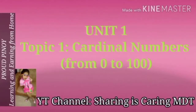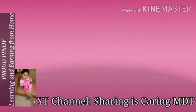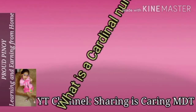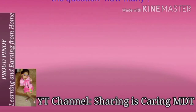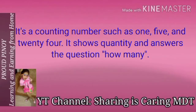Unit 1, Topic 1: Cardinal numbers from 0 to 100. What is a cardinal number? A cardinal number is a counting number such as 1, 5, and 24. It shows quantity and answers the question: how many?